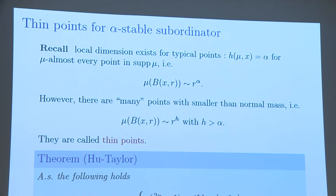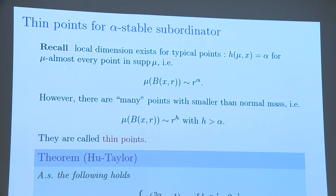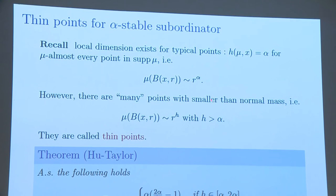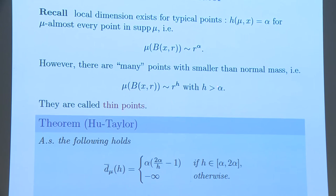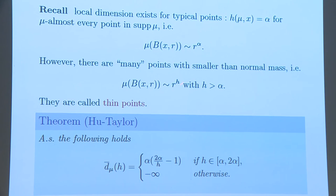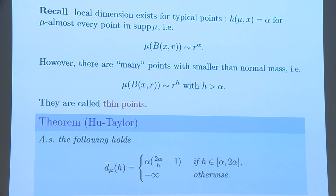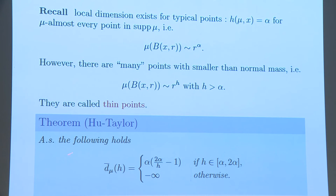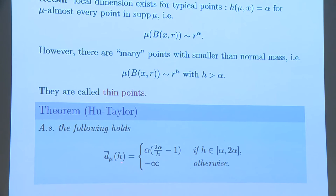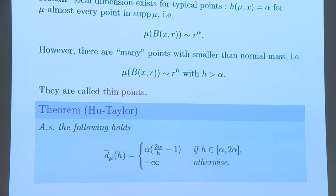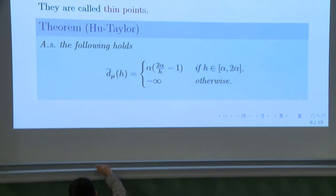Finally, what is called a thin point? Recall for alpha-stable subordinator, for mu almost every point, we have this power law with alpha. In this case, the power law exists, the limit exists, for almost every point. But there are many other points. We have another power law with bigger exponent H. In this case, our power to H is much smaller to that one. We call it, in this case, we call the point X a thin point. Hu and Taylor in 97 proved that the Hausdorff dimension of set of points with given regularity H is this function.